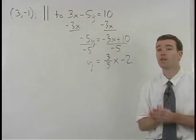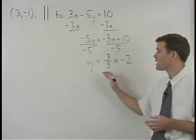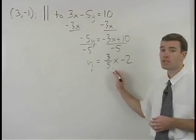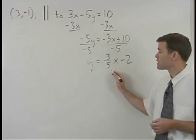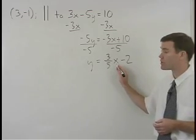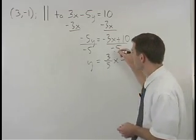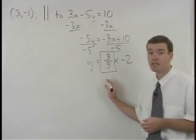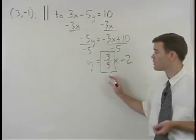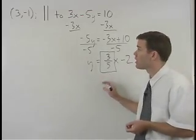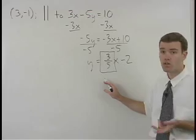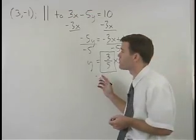Remember, in slope intercept or y equals mx plus b form, the slope of this line, or its m, is the coefficient of the x term, which in this case is 3 fifths. So this line has a slope of 3 fifths. And since our line is parallel to it, our line must also have a slope of 3 fifths.